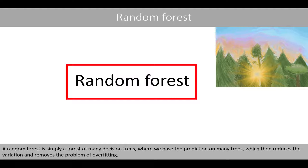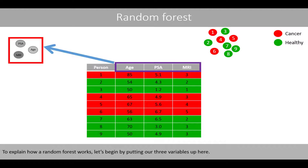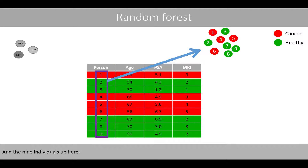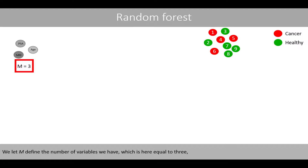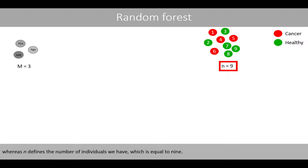A random forest is simply a forest of many decision trees, where we base the prediction on many trees, which reduces the variation and removes the problem of overfitting. To explain how a random forest works, let's begin by putting our three variables and nine individuals on a grid. We let m define the number of variables we have, which is here equal to 3, whereas n defines the number of individuals we have, which is equal to 9.